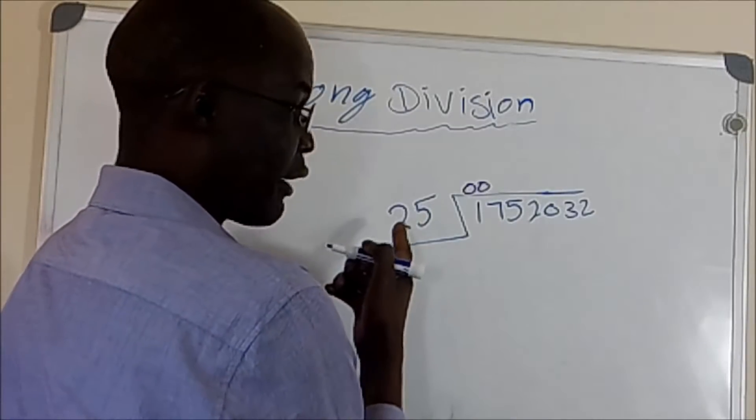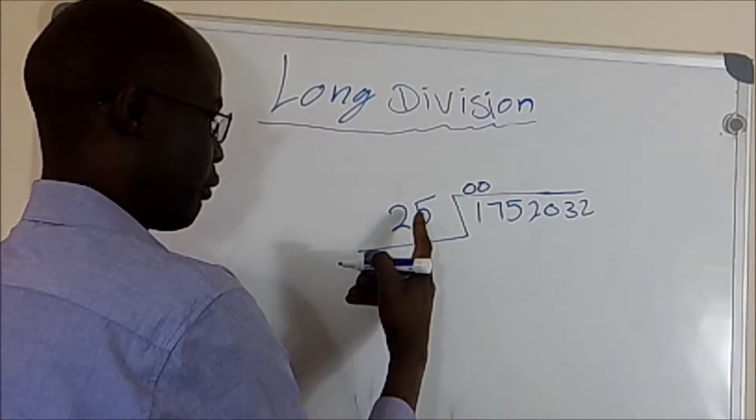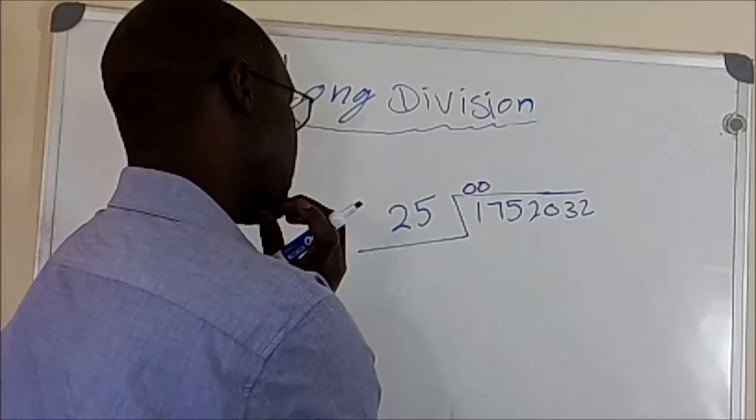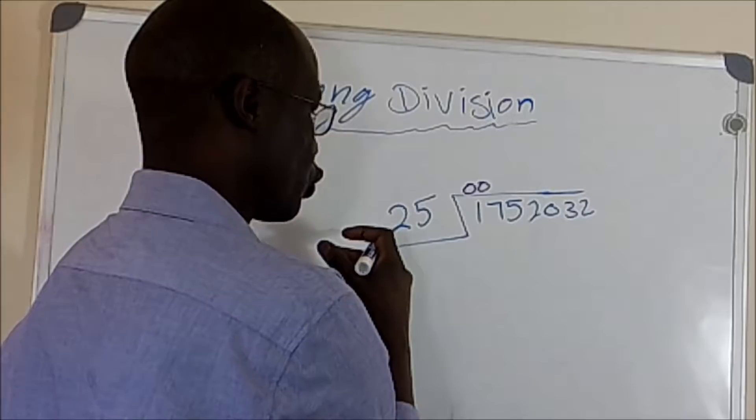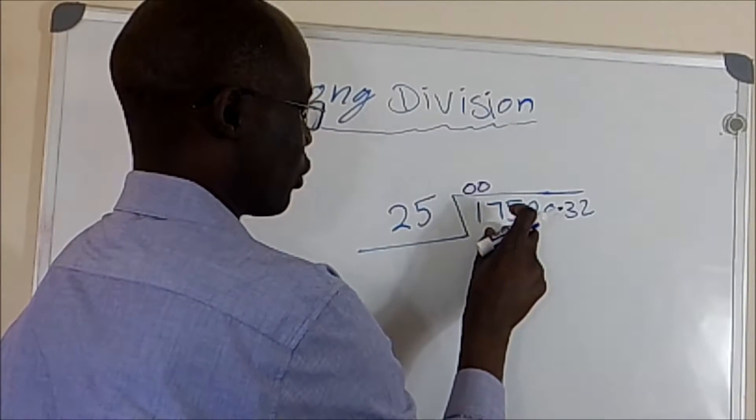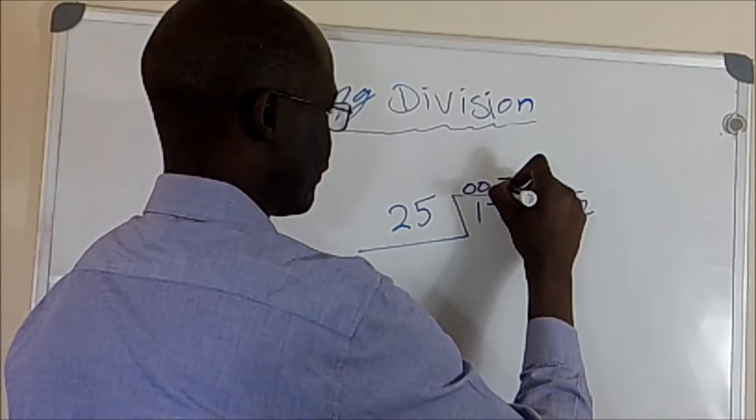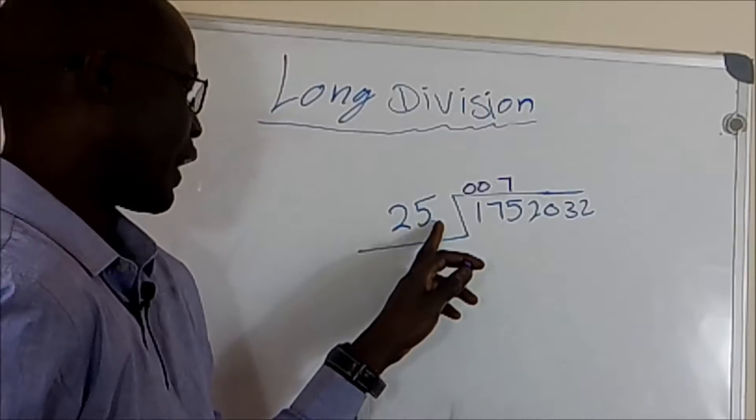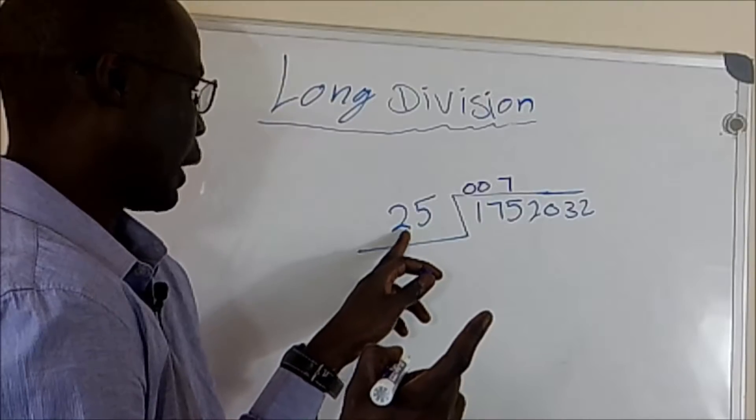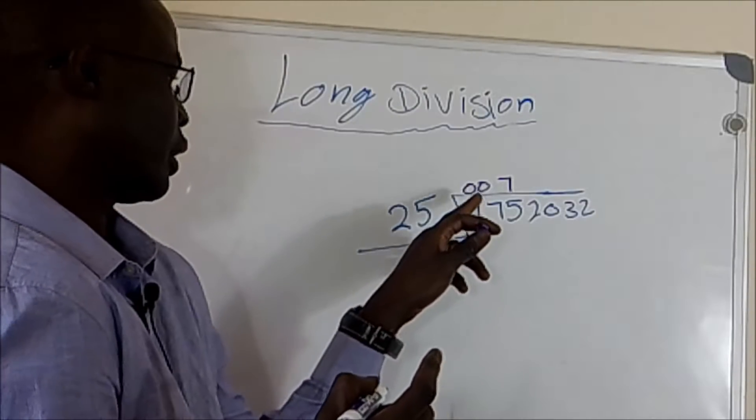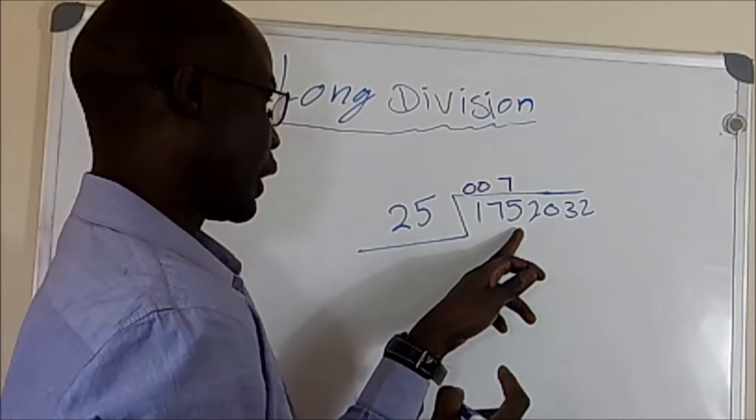So if we try 5, it would be less. Six would also be less, because 6 times 5 is 30, and 6 times 2 is 12, which is 150, and we have more than that. So that means the number after that would be 7, because 7 times 5 is 35, carry 3, and 7 times 2 is 14 plus 3, you got 17, which is 175. So we got it right.